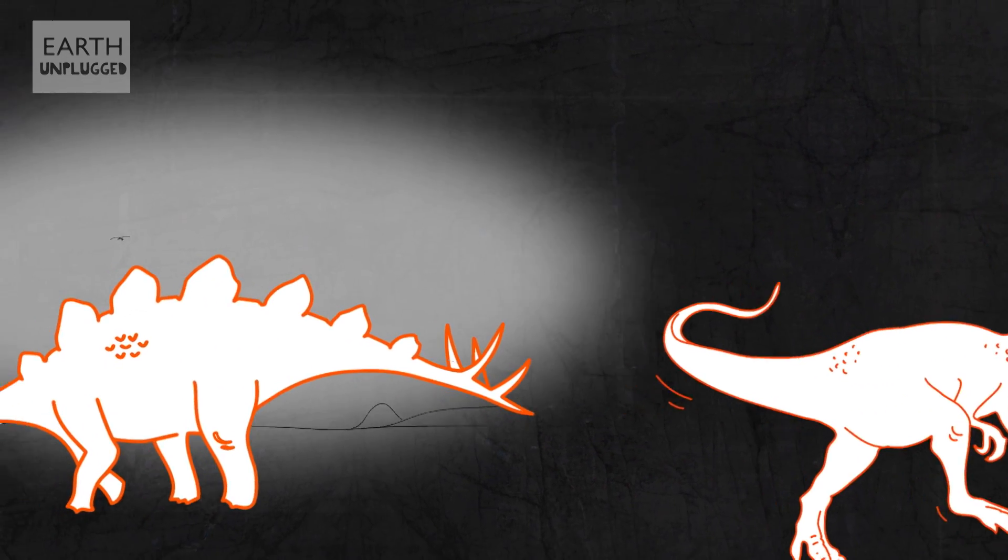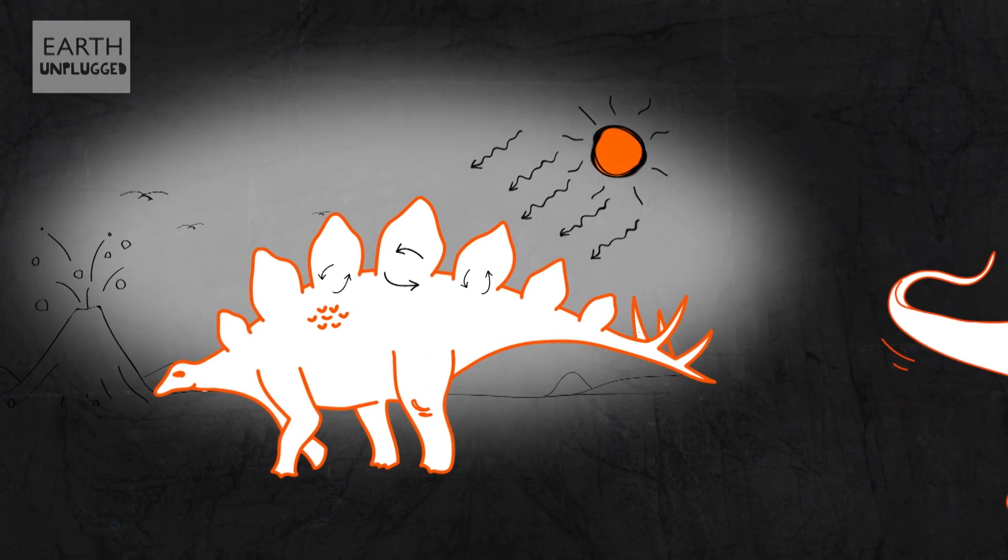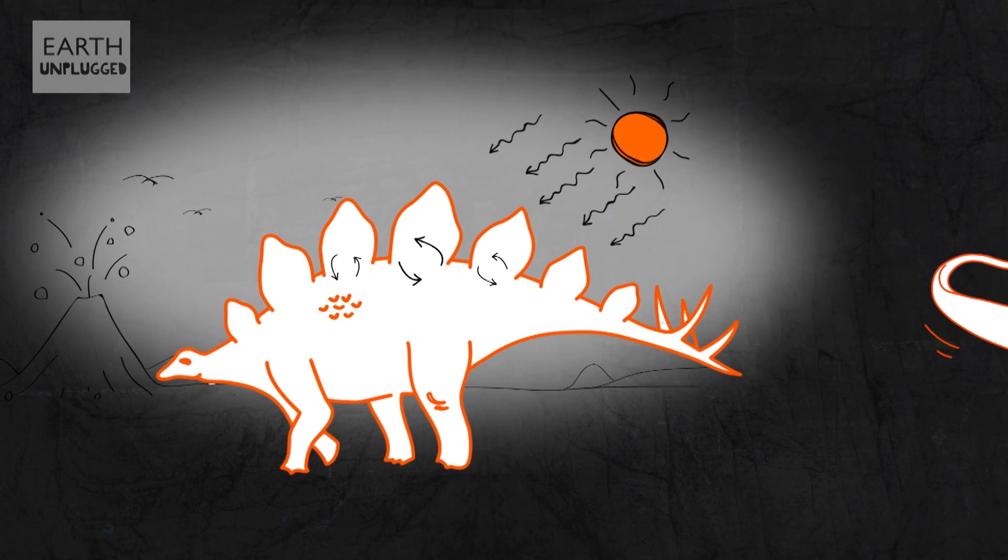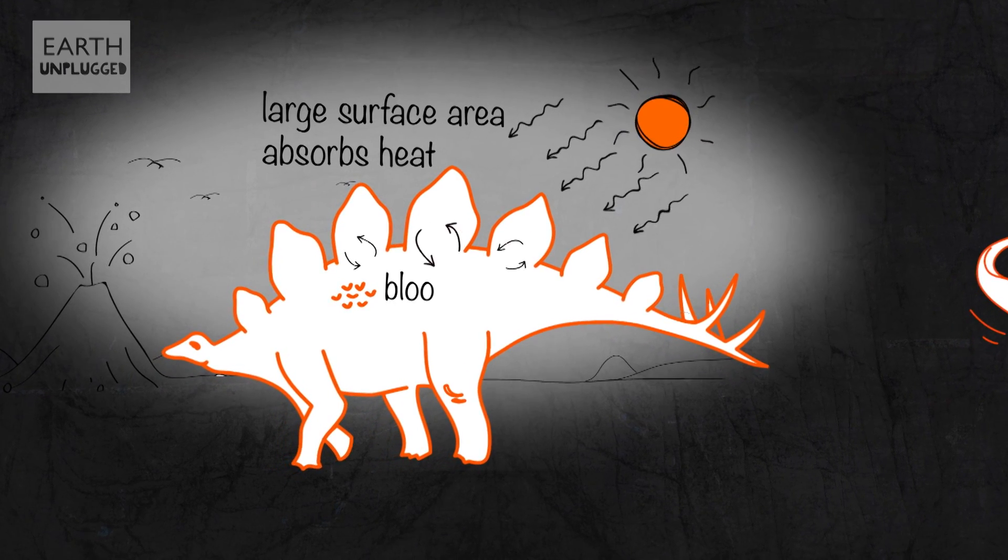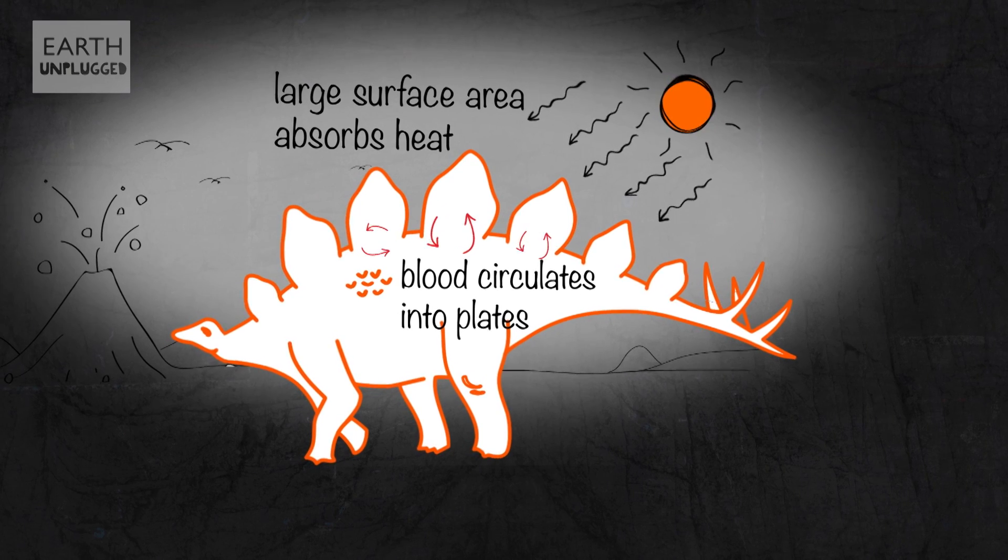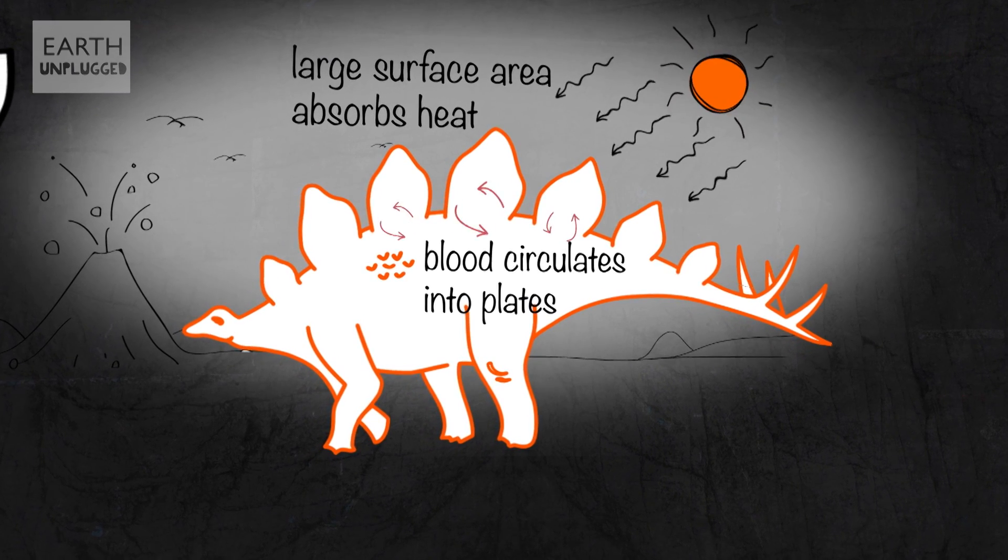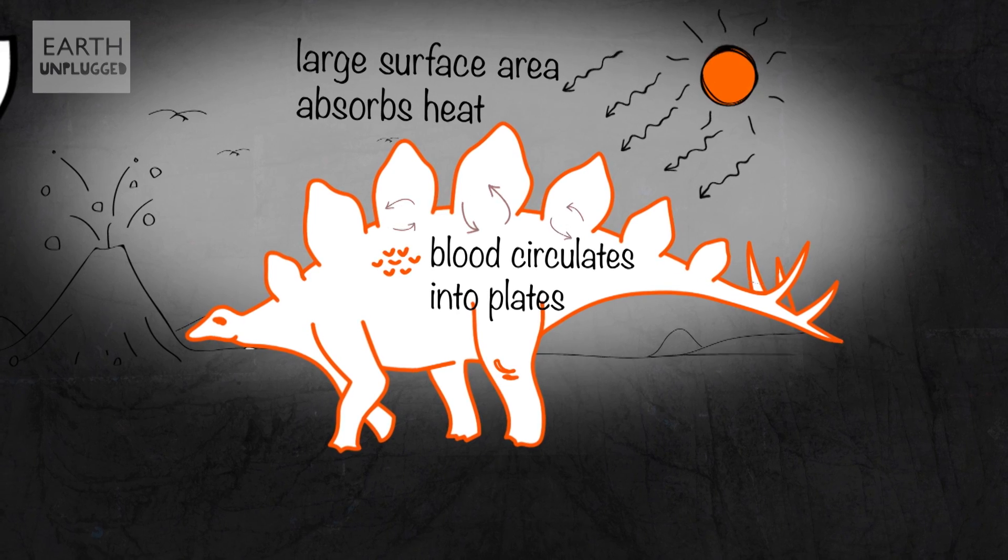Others think that the plates were used to regulate its body temperature, blushing red with blood to lose heat on a hot day when the sun is burning down over the prehistoric Earth, or gathering the heat from the sun to warm up on a cool day, like wearable solar panels for dinosaurs.